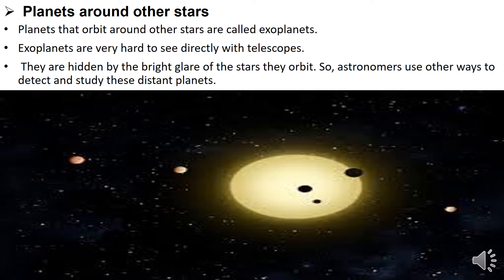What type of planets around other stars? Planets that orbit around other stars are called exoplanets. Exoplanets are very hard to see directly with telescopes. They are hidden by the bright glare of the stars they orbit.